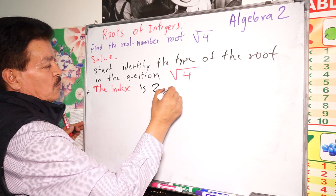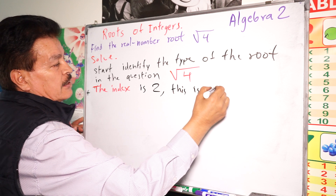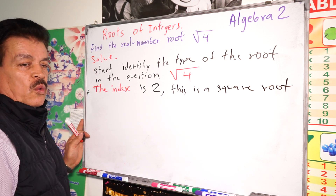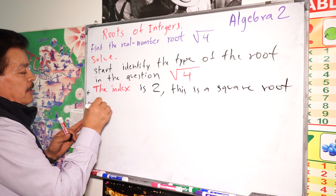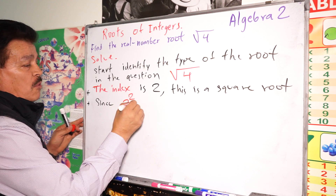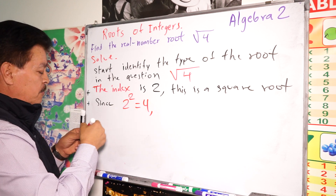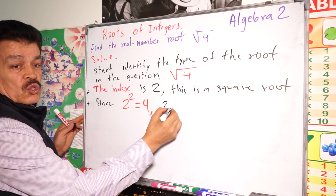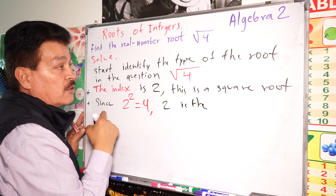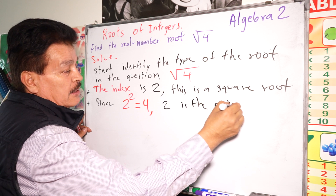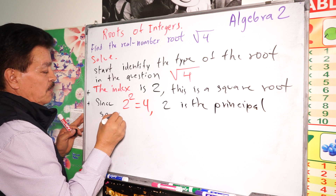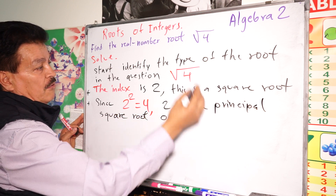This is a square root, so the index is two. Since two to the second power equals four, then two is the principal square root of four. That is the answer — very simple.